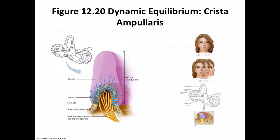Deafness can be either conduction deafness, when something hampers the sound conduction to the fluids of the inner ear, or sensorineural deafness, which results from damage to the neural structures at any point from the cochlear hairs to and including the auditory cortical cells.